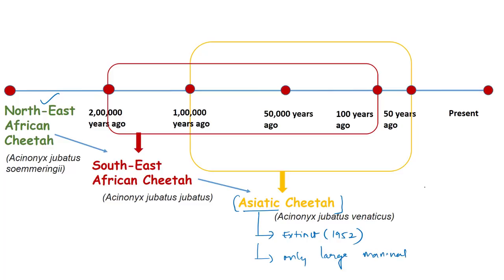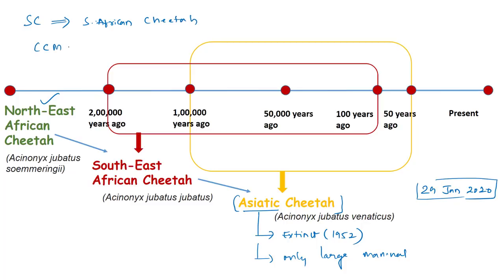The Center for Cellular and Molecular Biology (CCMB) conducted mitochondrial DNA analysis to understand finer details of the evolutionary history of both Asiatic and African cheetahs. Evolution is a process where one population of a species changes over time to the point where the new species is distinct from its parent species and they can no longer interbreed. For a population to evolve into a new species, something must keep populations from intermixing — even a physical barrier like mountains or rivers can divide a population into two or more groups, preventing interbreeding.